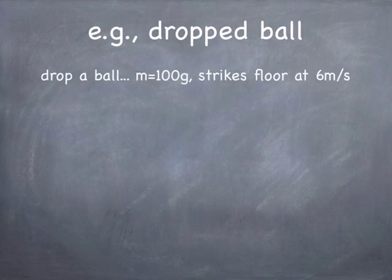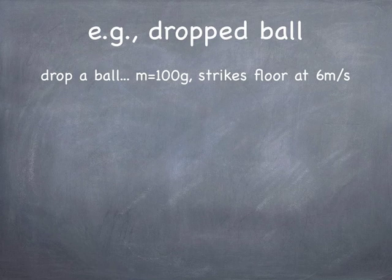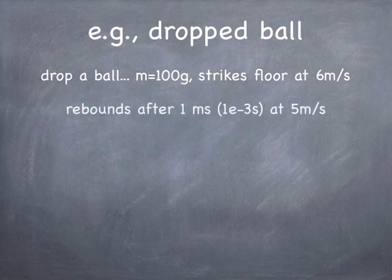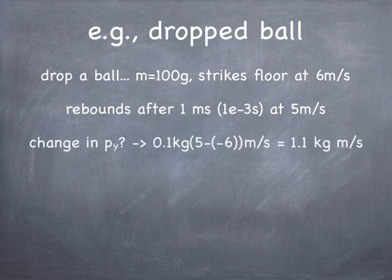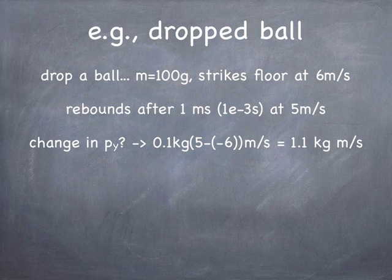Let's do an example that illustrates the magnitude of these forces. Basically, this is just a ball dropping, hitting the floor, and bouncing up. It's a 100-gram ball. It strikes the floor at a speed of 6 meters per second with the momentum pointing down. It rebounds with a speed of 5 meters per second with momentum pointing up. All I want to do is figure out the rate of change of momentum — the change in momentum per unit time. The collision with the floor only takes 1 millisecond. The change in momentum is the mass times the change in the y component of velocity: it's plus 5 minus negative 6 times 0.1 kilograms, which works out to be 1.1 kilogram meters per second.